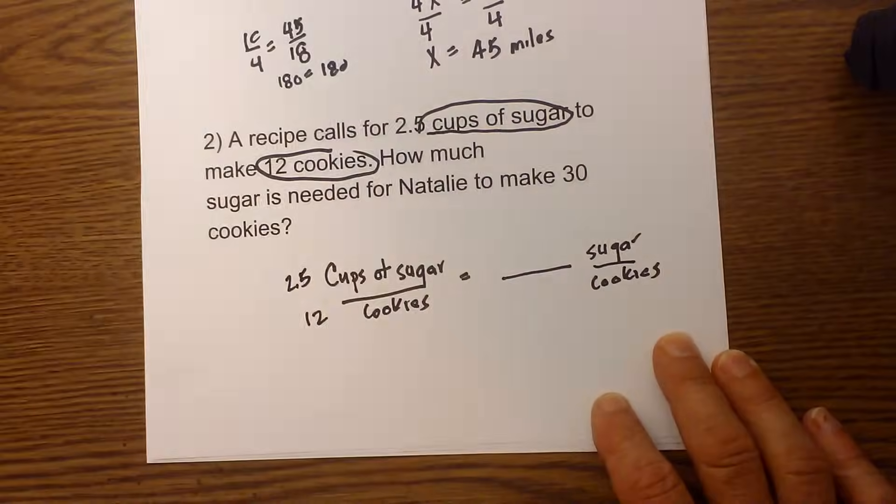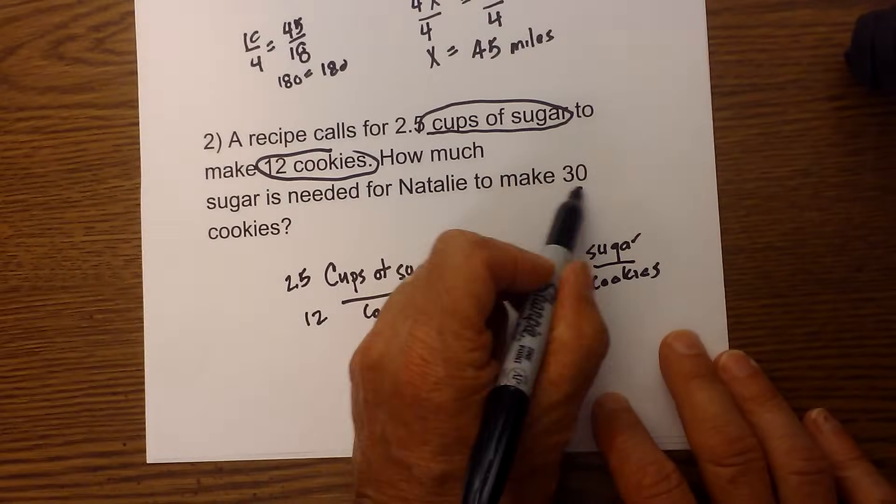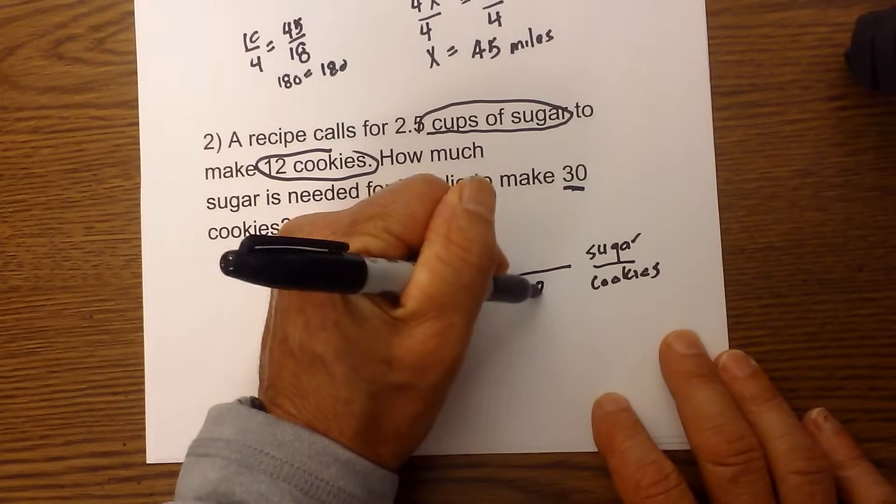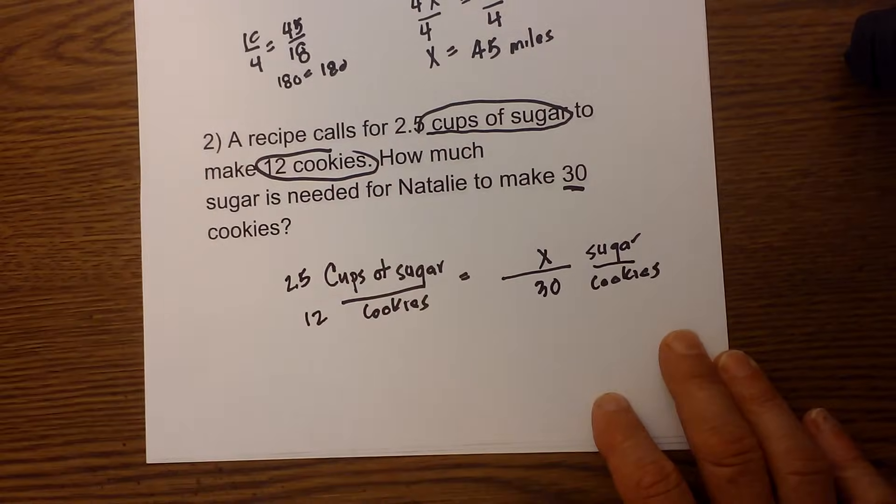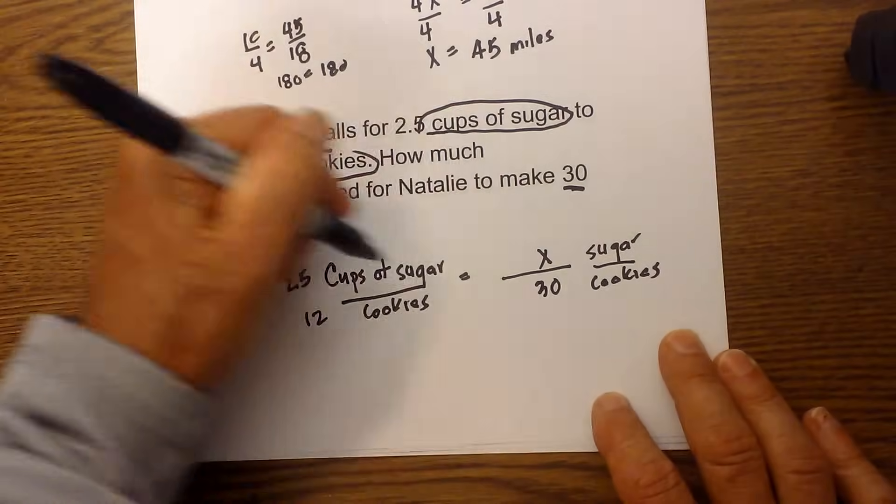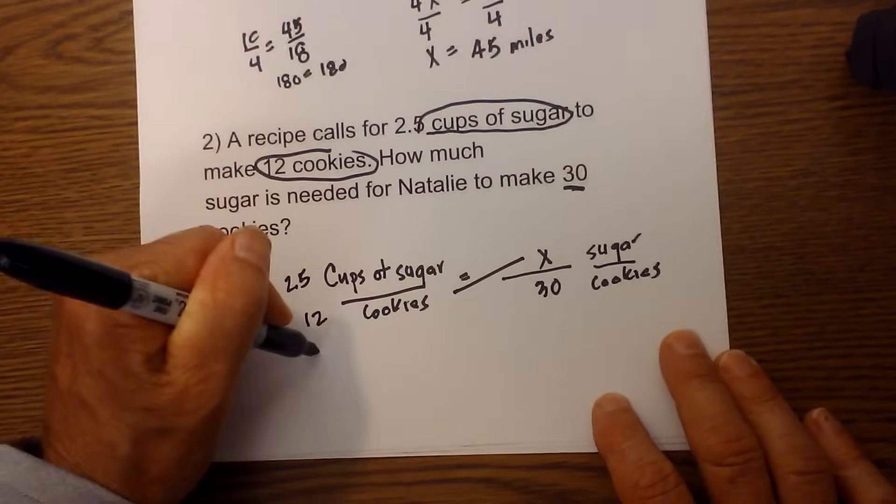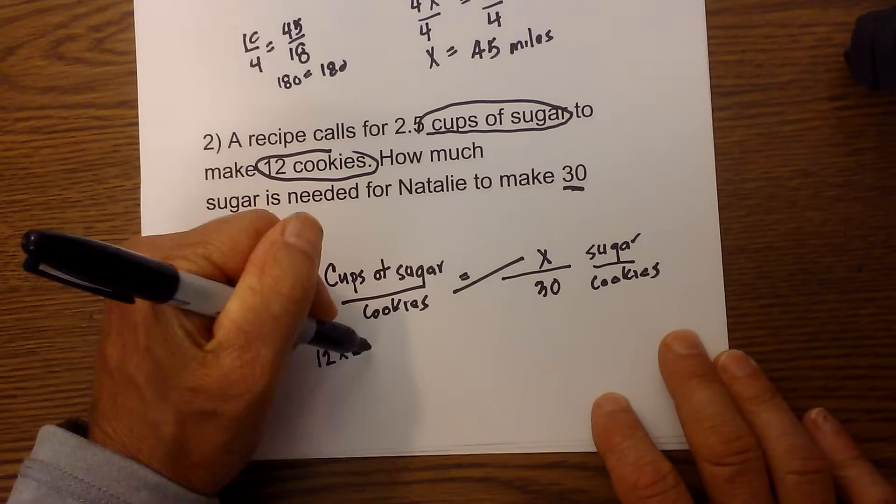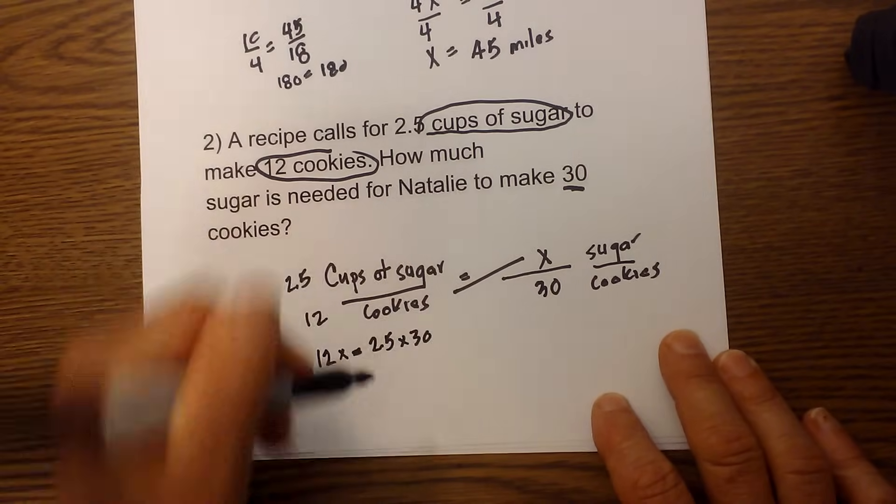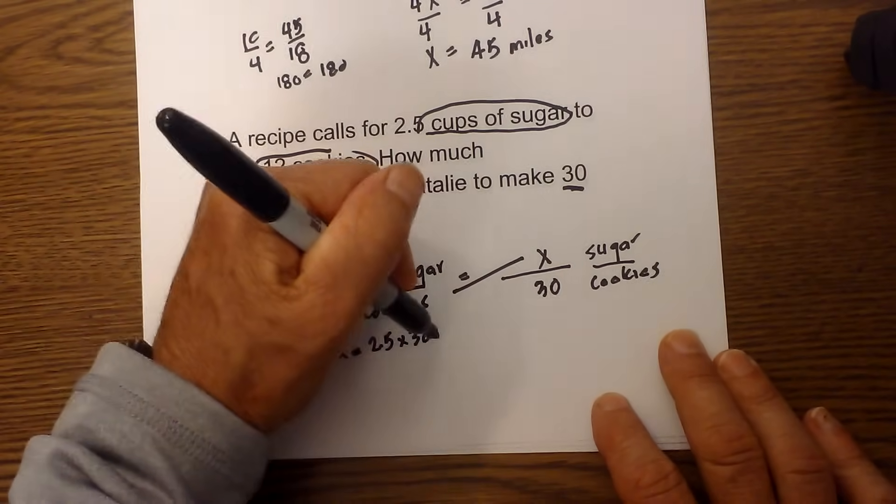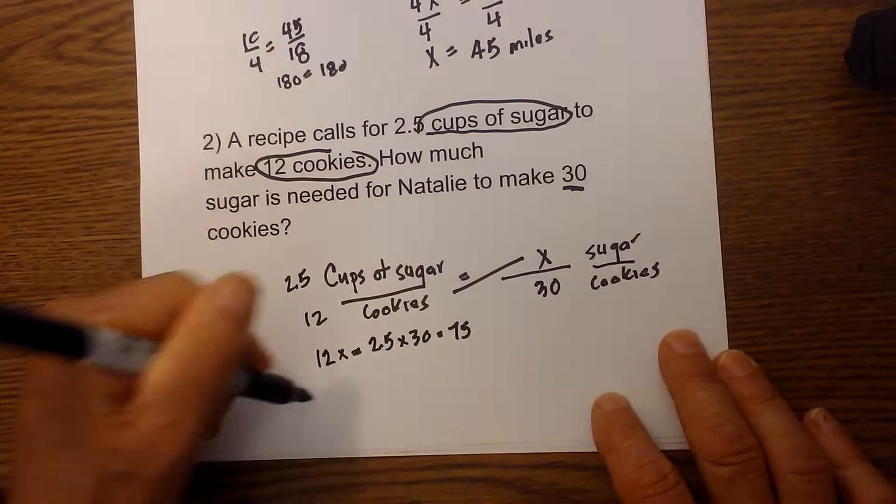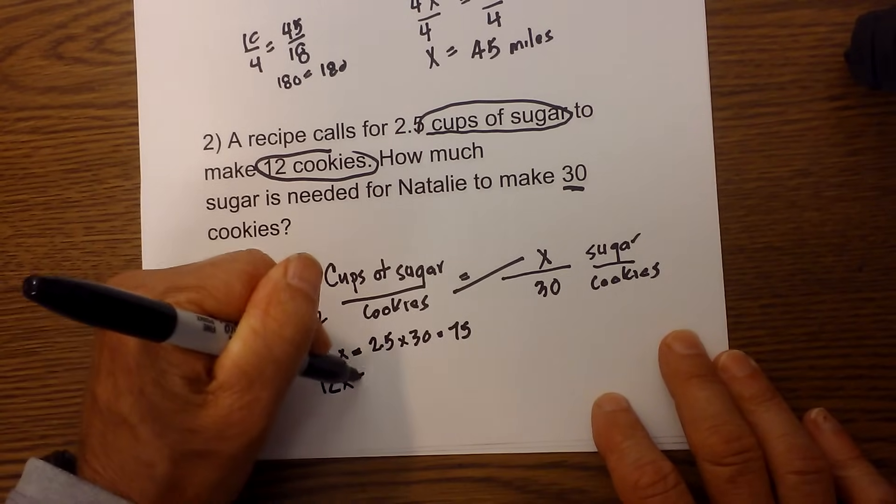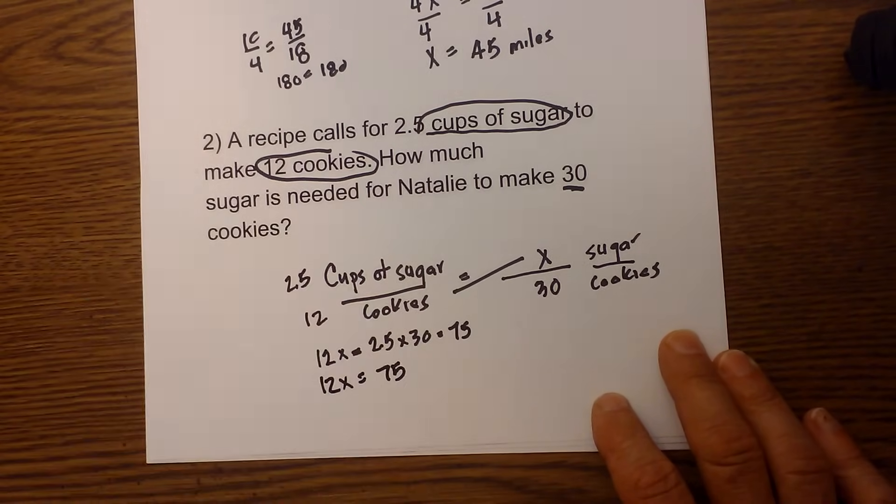Then I just fill in what information is given. It says 30 cookies, so I'm going to write a 30 here, and that will be X. I then cross multiply: X times 12 will be 12X equals 2.5 times 30. 2.5 times 30 is equal to 75, so I'm going to rewrite this: 12X is equal to 75.